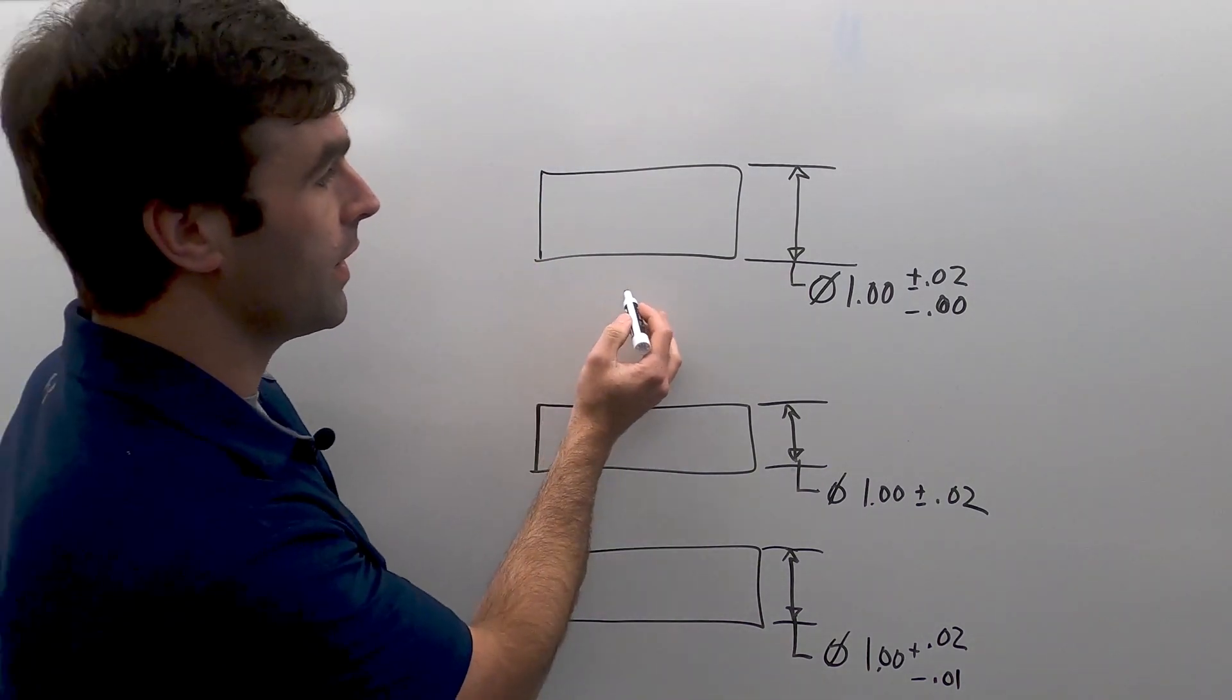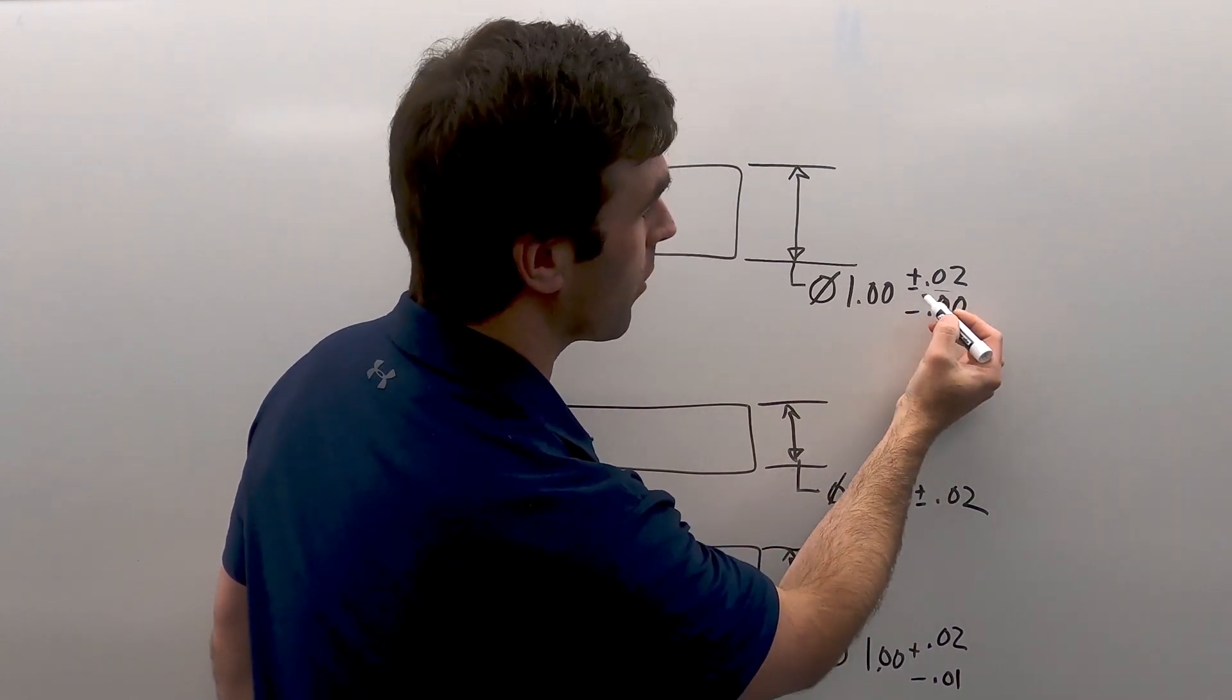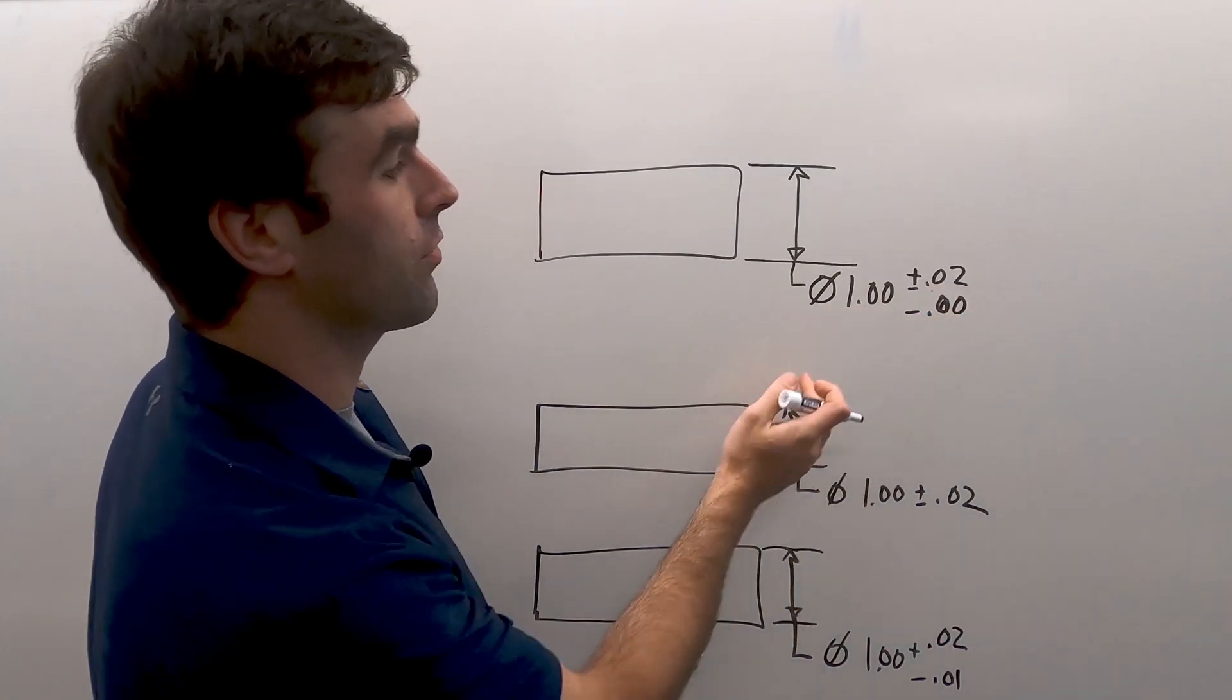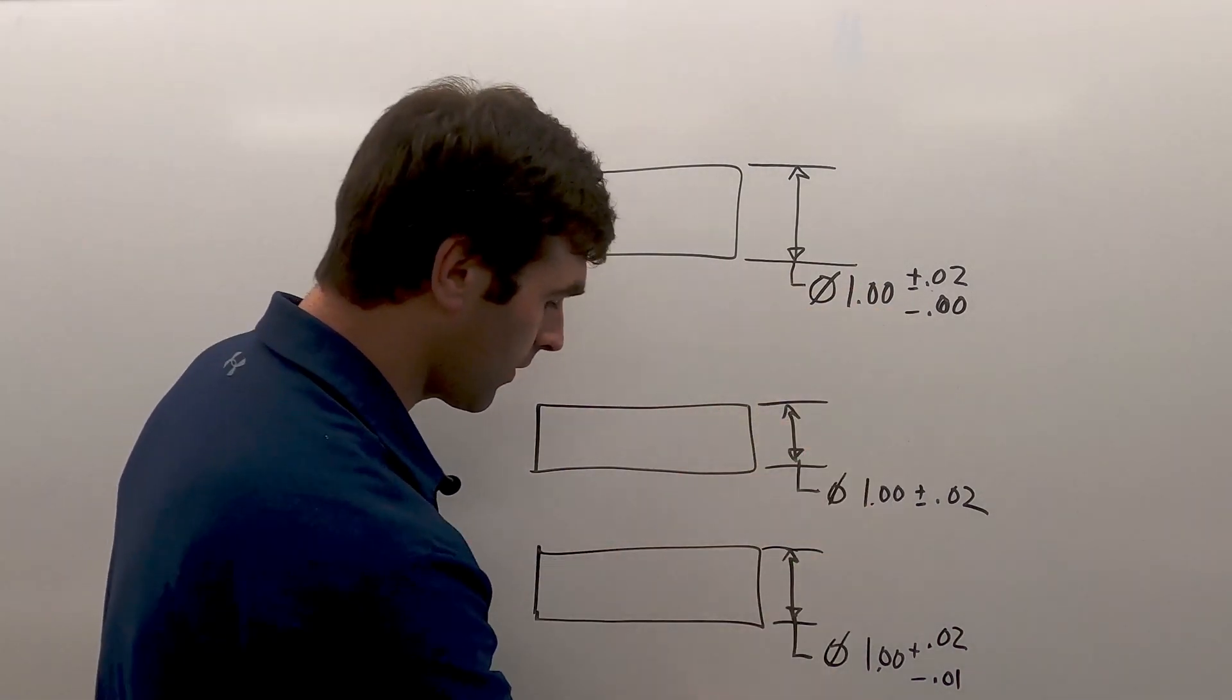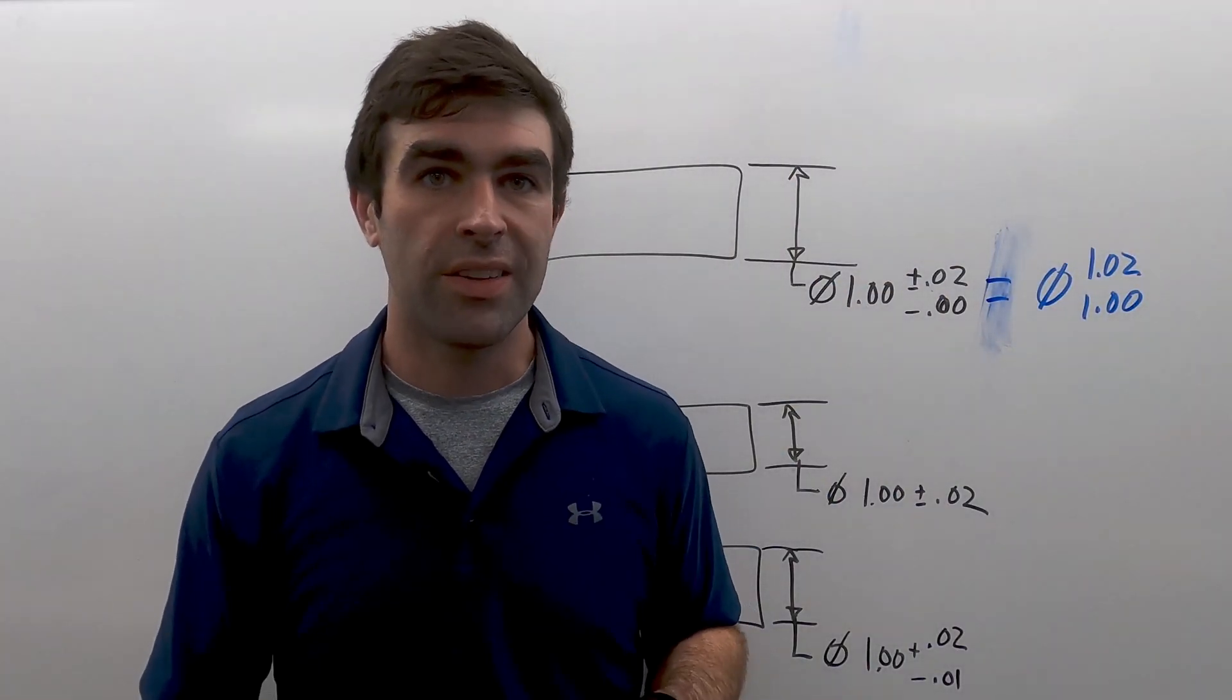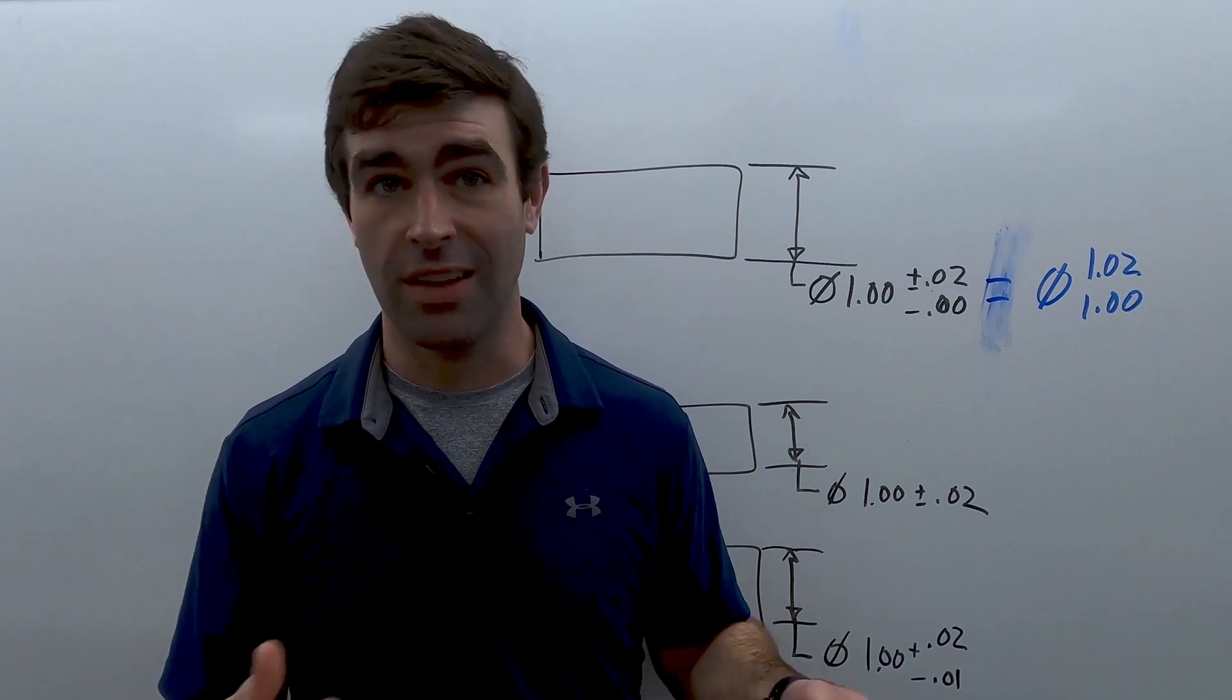So plus minus dimensioning will come in these flavors. First we have unilateral. So if you notice we have our dimension, we have how much larger it can be. So it can be one inch plus 20 thou and how much smaller it can be. So one inch minus zero, one inch. This is equivalent to writing diameter 1.02 over 1 as a limit dimension. They mean the same thing.